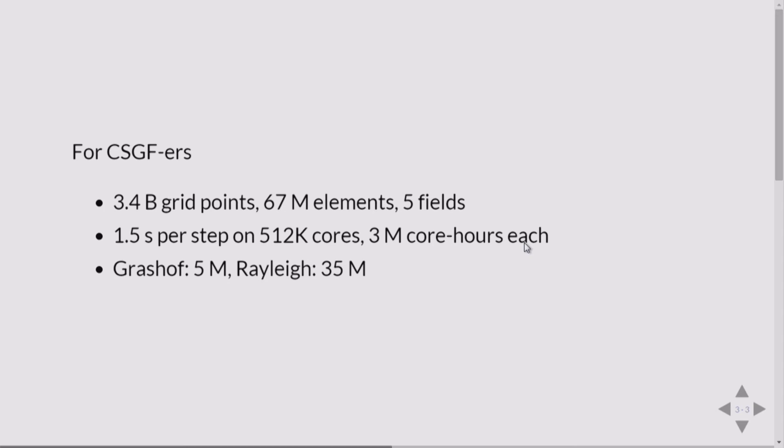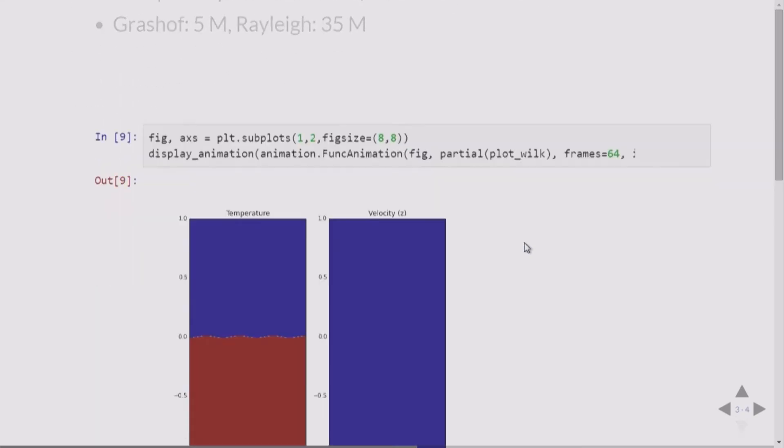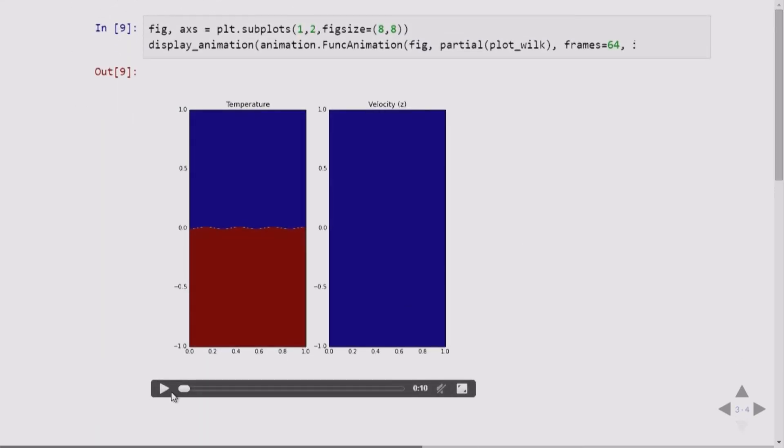We did three shots, one with 2.5, one with 3.5, and one with 4.5 modes across the diagonal. Each one took about 3 million hours. And then an extension, which I'll present in a little bit, took four times that long. If you're a fluid dynamicist, the Grashof number we were able to reach was 5 million. The Rayleigh number was 35 million. And the results look like this.